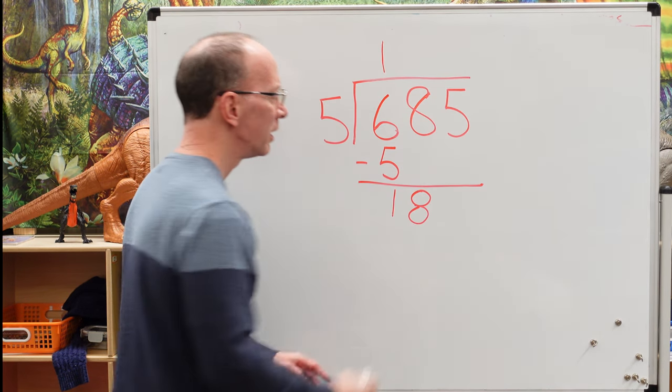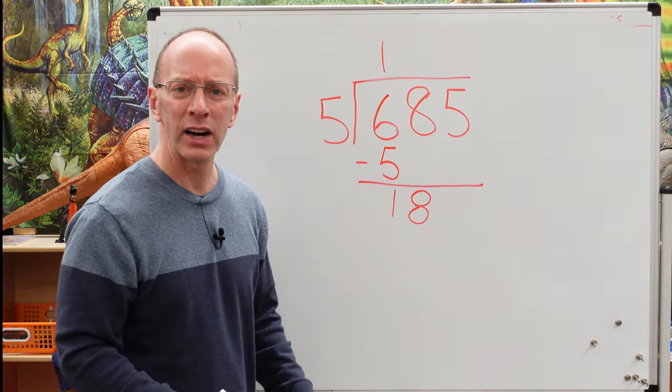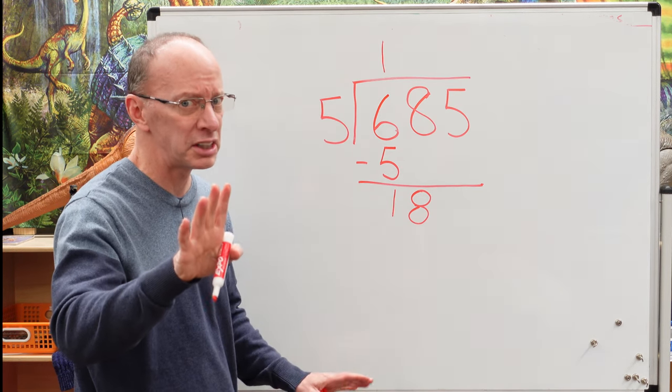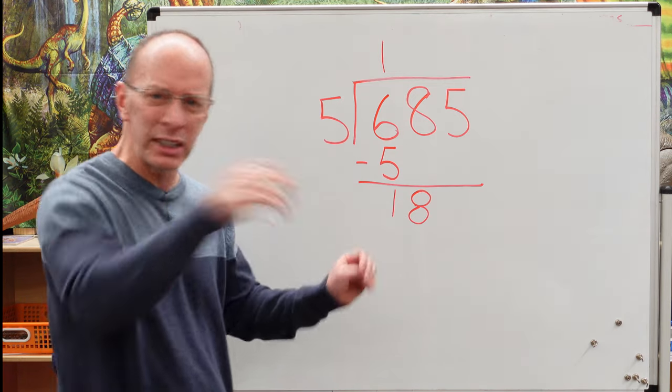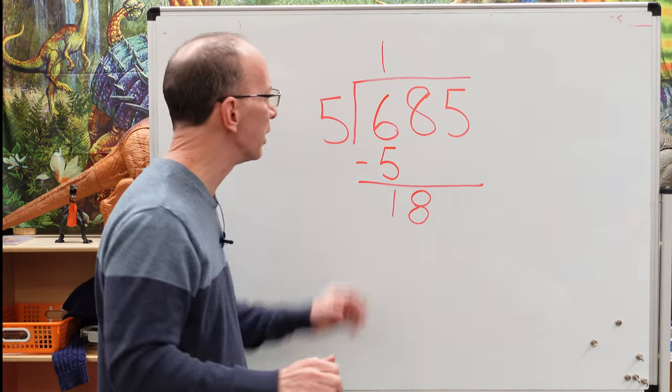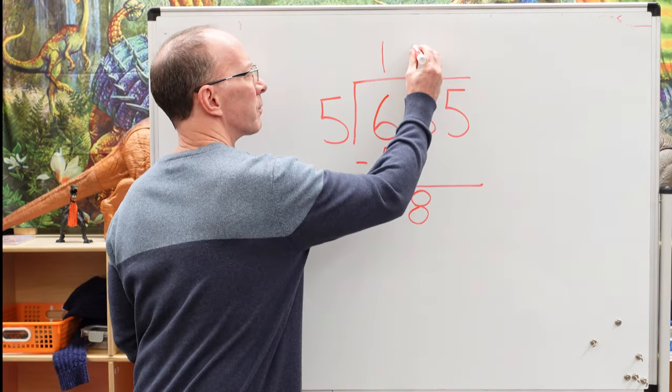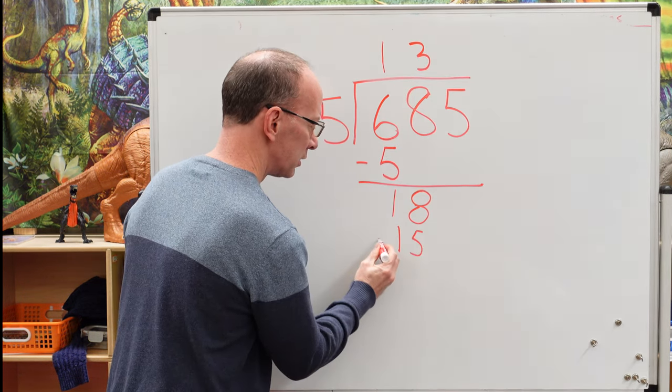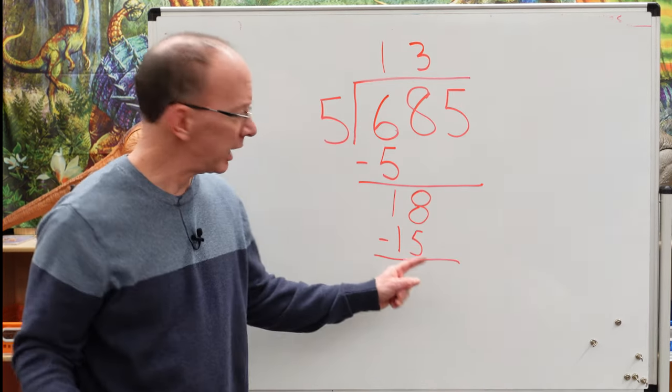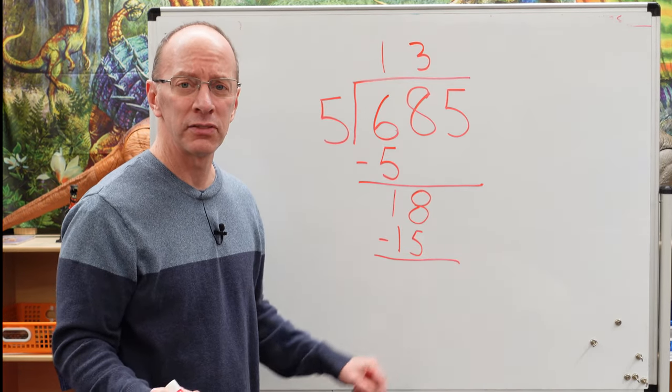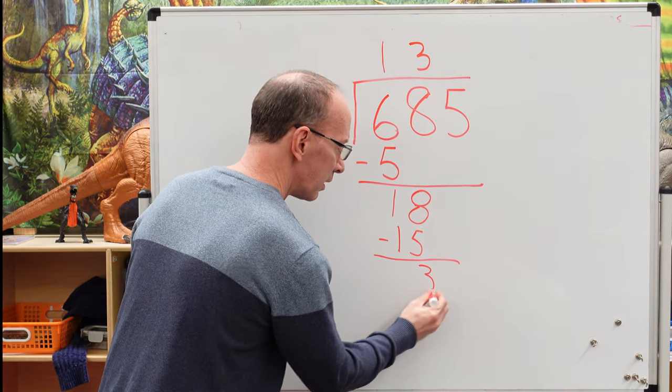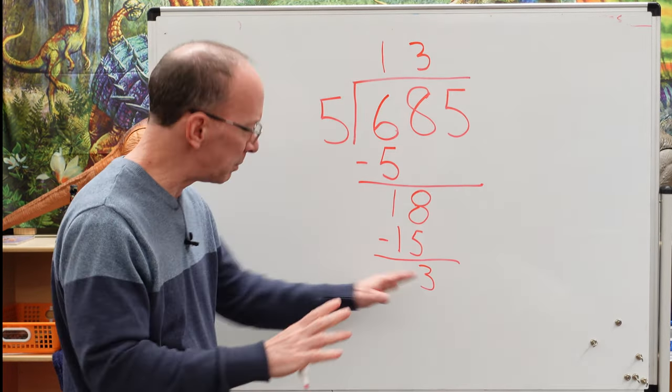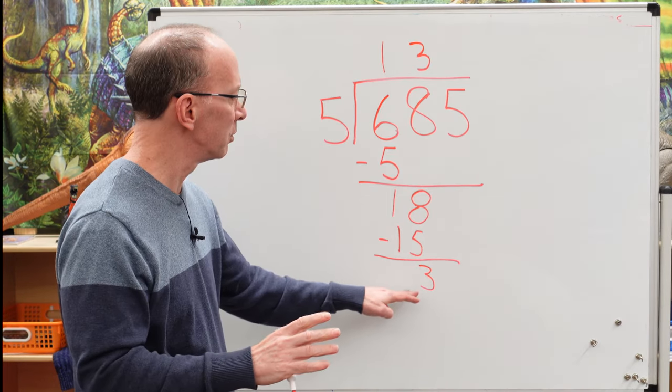How many times can I put 5 into 18? 5 times 2 is 10. 5 times 3 is 15. 5 times 4 is 20. Too high. Bring it down. 5 times 3. We'll put 3 up here. 3 times 5 is 15. We're going to subtract that. 8 minus 5 is 3, and 1 minus 1 is 0. You don't even have to put a 0 there. Just keep it simple. Put the 3 there.